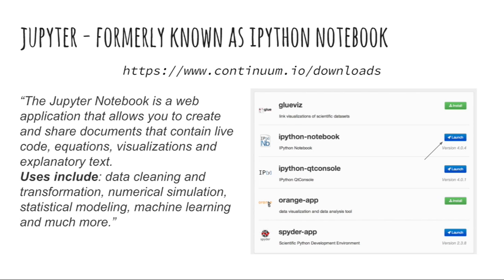Jupyter Notebook is an application that allows you to create and share documents that contain live code, equations, visualizations, and explanatory text. A notebook is a document which contains your live code. Each notebook needs to run on a platform known as a kernel. In our case, the kernel will always be Python 3, since we are typing Python 3's syntax into the notebook.